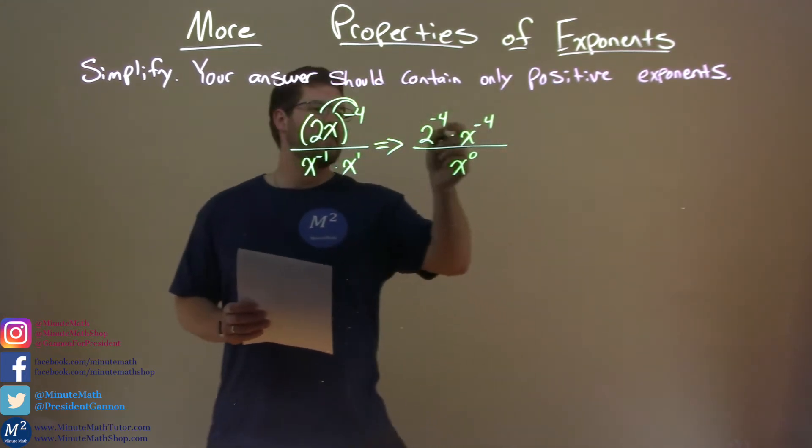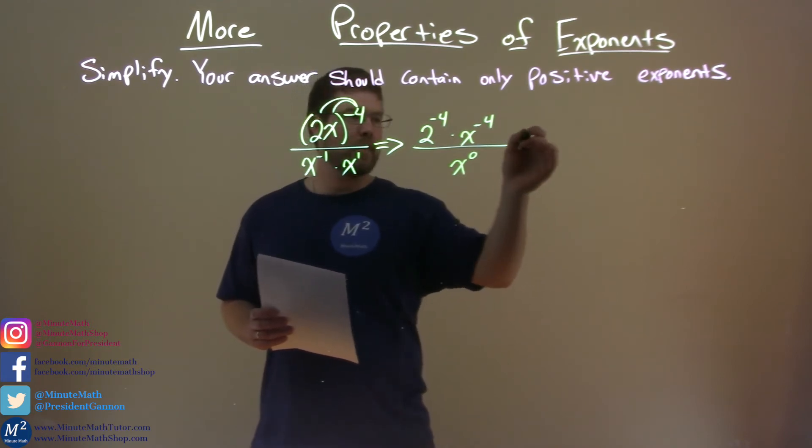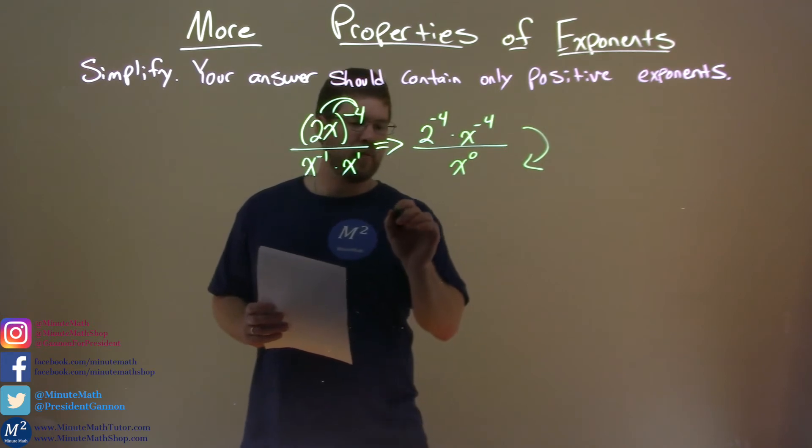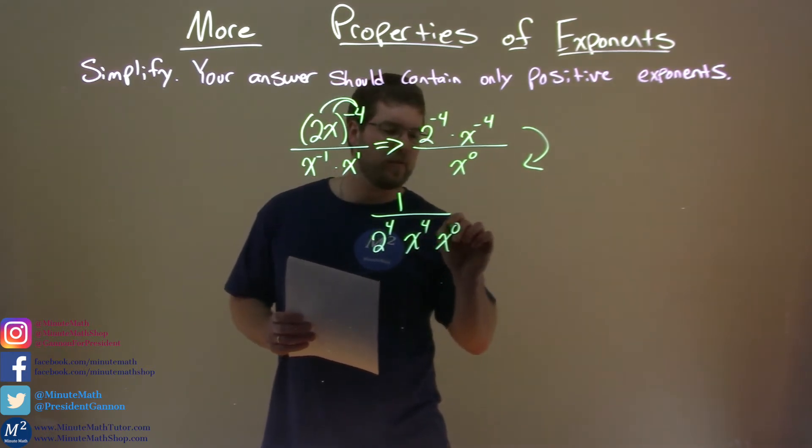Okay, so now we have negative exponents. We know negative exponents in the numerator are positive in the denominator, so we're going to bring those down. Doing so, we have one over two to the positive fourth power times x to the positive fourth power times x to the zero power.